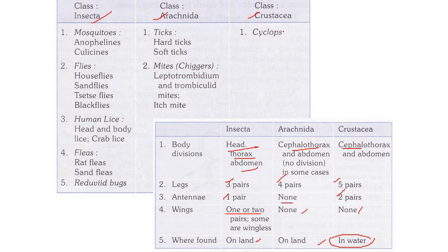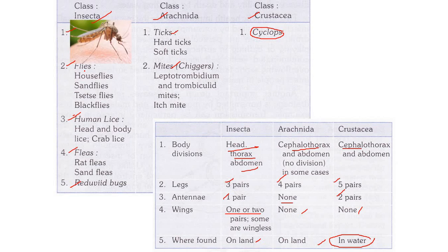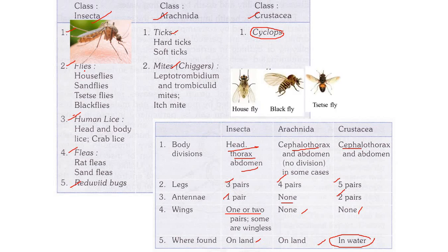The groups of medical importance include cyclops and ticks and mites under Arachnida. Under Insecta: mosquitoes, flies, lice, fleas, and reduviid bugs. The notable flies are housefly, black fly, and tsetse fly. Housefly is a mechanical vector for many feco-orally transmitted diseases. Black fly transmits onchocerciasis, and tsetse fly causes sleeping sickness.